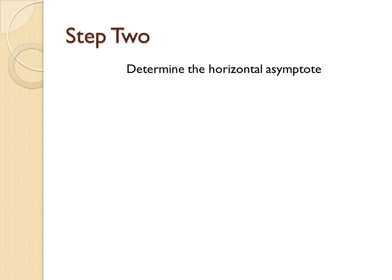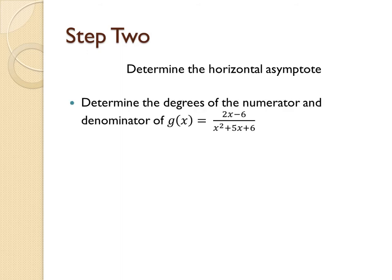For step 2, we need to determine the horizontal asymptote of this rational expression. To do so, we will first find the degrees of the numerator and denominator. So, first we will look at the leading terms of each.